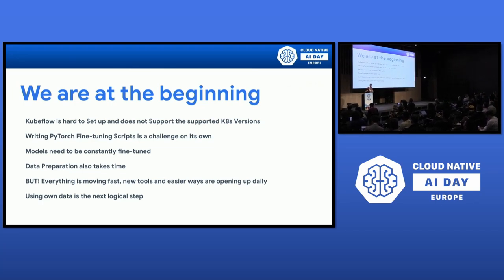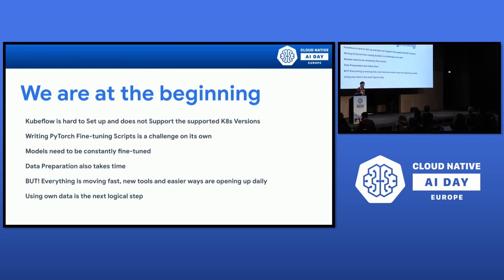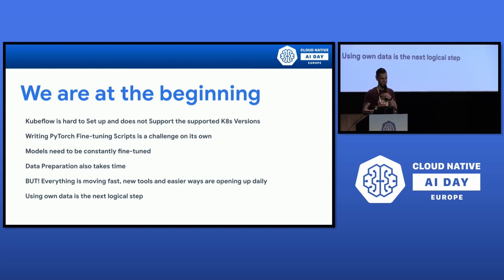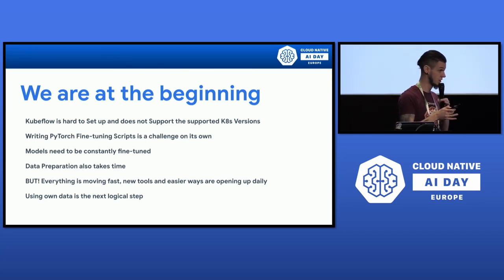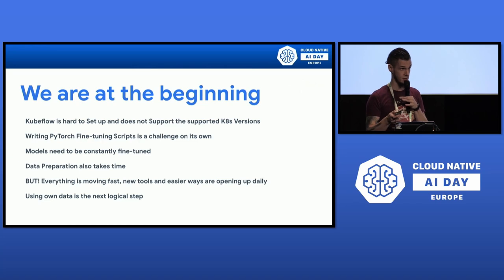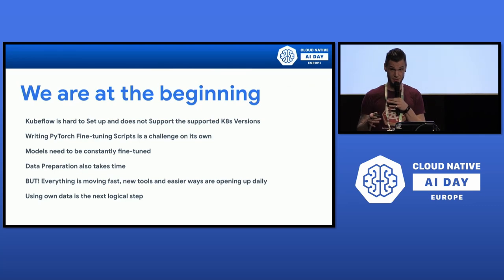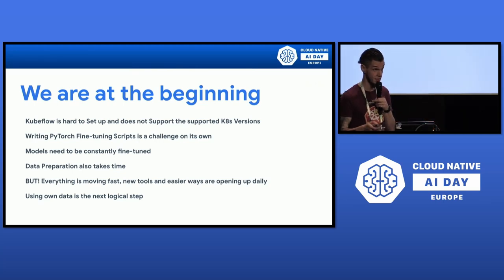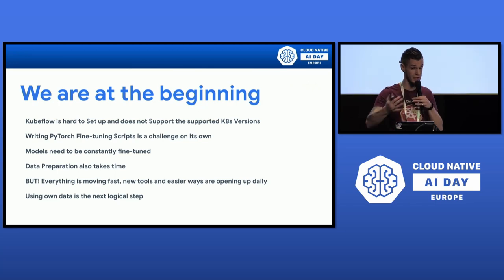This is the beginning, not the end. The main problem we currently face is that KubeFlow is horrible to set up — really horrible. We're waiting for a solution that's just a Helm chart that runs in your cluster. Some vendors package it — Canonical has an easy out-of-the-box solution, the big cloud providers do too — but running it on-prem yourself is not fun. You still need to write the PyTorch fine-tuning scripts, there's no plug-and-play, and data preparation takes significant time.